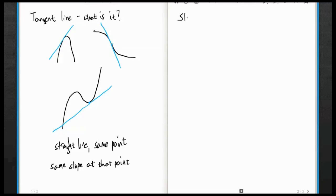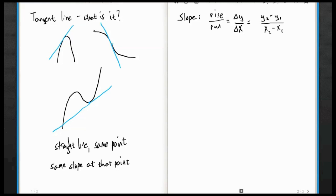Slope is no problem — we learned that in ninth grade. Slope is rise over run. Using fancy mathematical terminology, it's Δy over Δx, where delta is the Greek letter meaning 'change.' To calculate: Δy = y₂ − y₁ over x₂ − x₁. The change in y is the rise, the change in x is the run. So we should be able to find the slope of a curve.